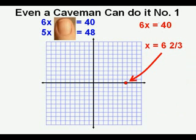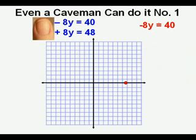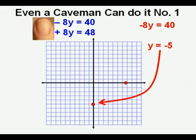Now he covers the x term to solve for the y-intercept. He has -8y = 40. To solve, he divides 40 by -8 and gets -5. He marks -5 on the y-axis as the y-intercept.